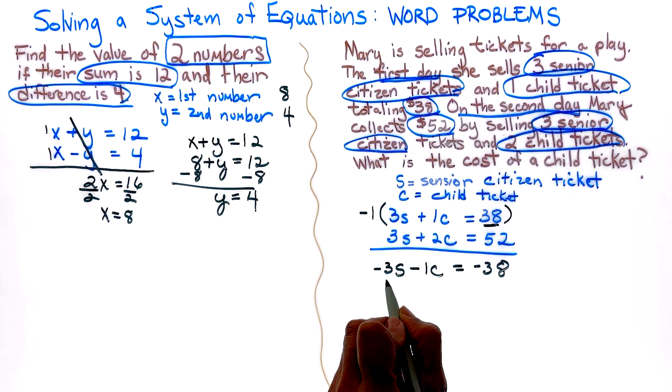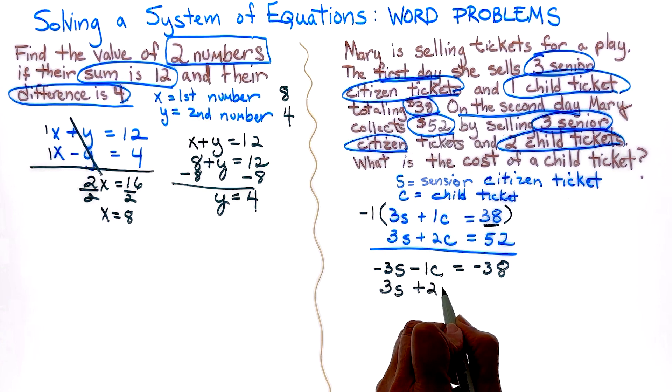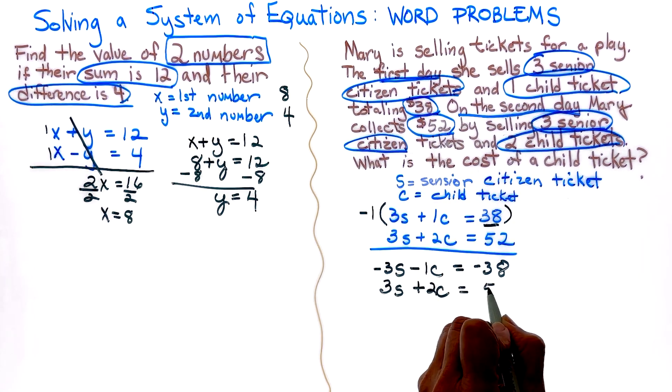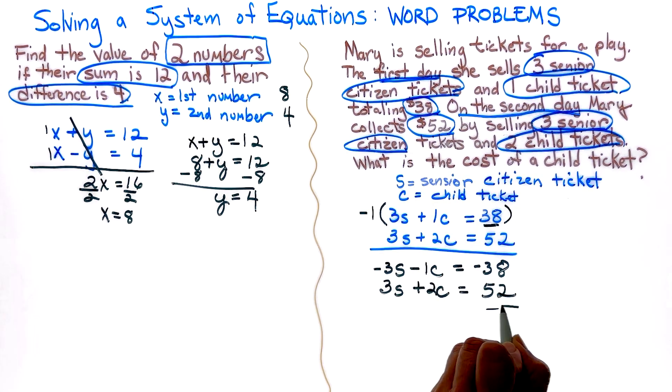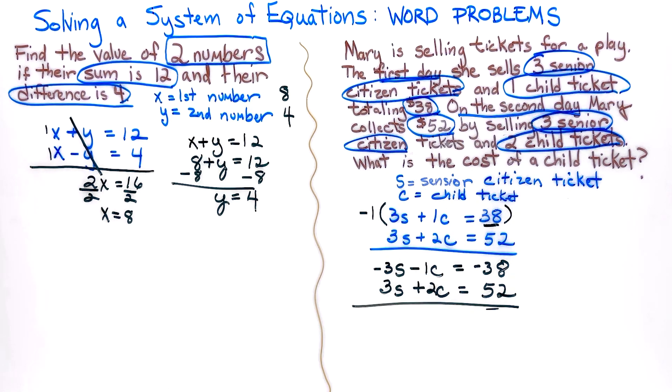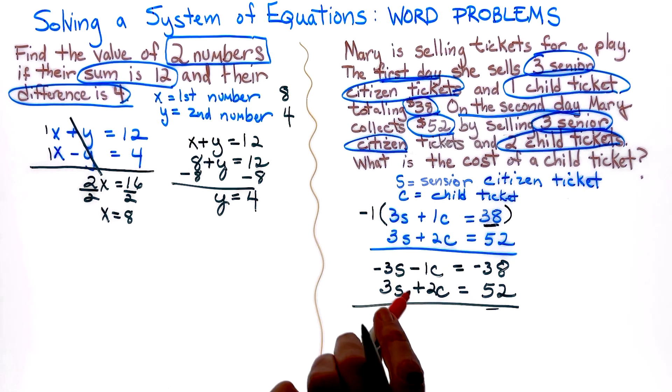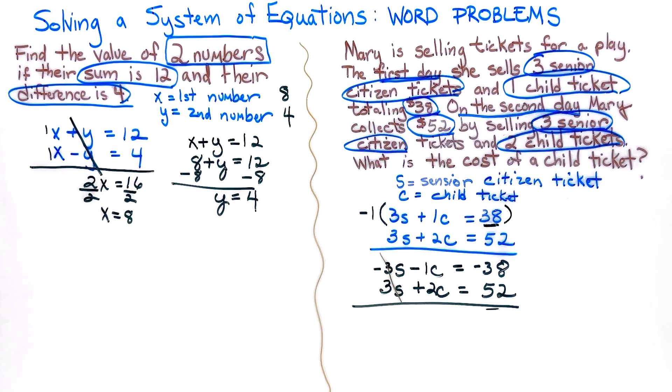Now I'm just going to go ahead and I am going to copy my bottom equation. There's nothing I need to do. And once I do that, I can see, indeed, I do have my pair of opposites. My senior tickets cancel out.